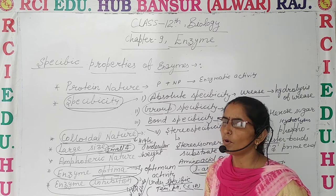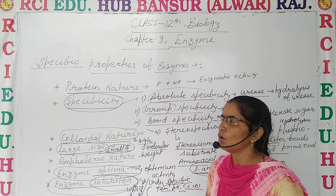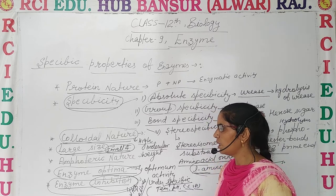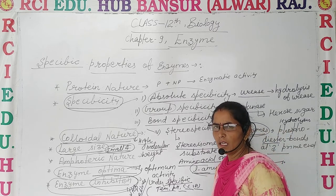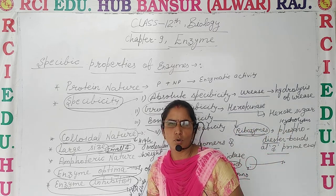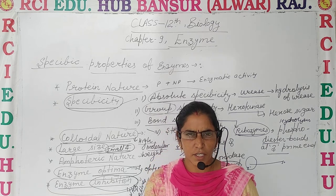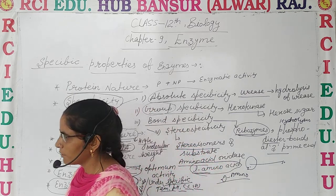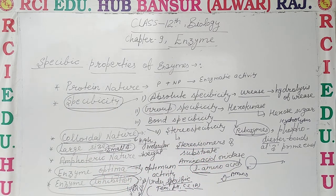To summarize: enzymes are protein in nature, they show specificity, colloidal nature, large size, amphoteric nature, enzyme optima, and enzyme inhibition. Please like, comment, and share the video. Subscribe also. Have a good day. Goodbye.